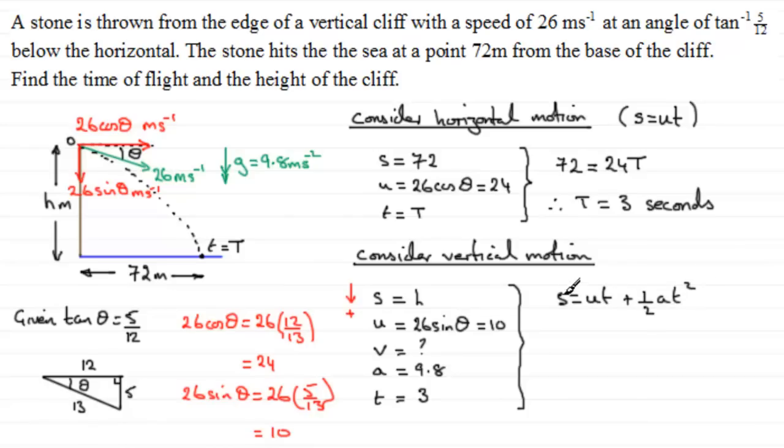And if we put our values in for s, it's going to be h, what we're trying to find. U times t, so that's going to be 10 times 3. And then it's plus a half times the acceleration, which we see is 9.8, multiplied by t squared, in other words, 3 squared. And if you work this out, you find you get 74.1. 74.1 meters, then, is going to be the height of the cliff.